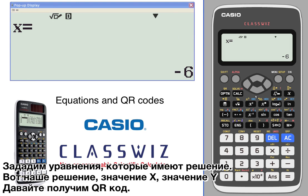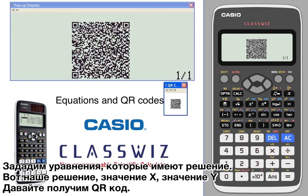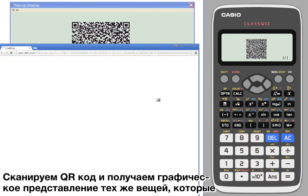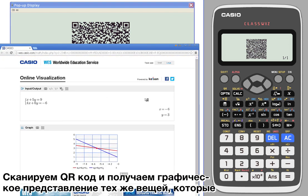There's our solution, x value, y value. But better yet, let's take a look at the QR code. Scan that QR code, and we get a visual representation of that exact same thing we were just looking at.